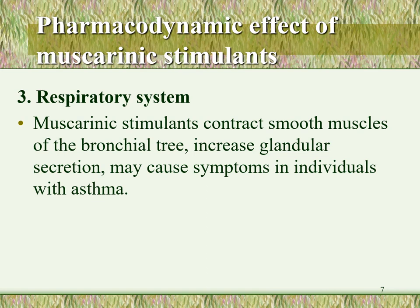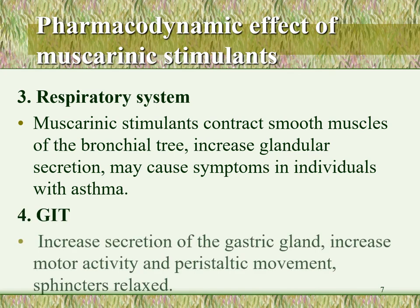These two respiratory effects — bronchoconstriction and increased secretions — can worsen symptoms in individuals suffering from asthma. On the GIT, muscarinic stimulants increase secretions of gastric glands including HCl secretion, increase motor activity and peristaltic movement, while sphincters are relaxed. The overall effect on the GIT is increased movement and relaxation of sphincters, which promotes defecation.